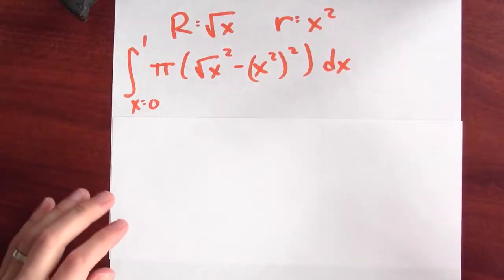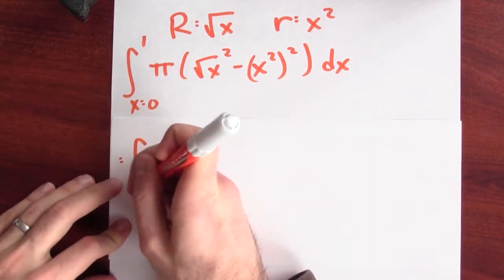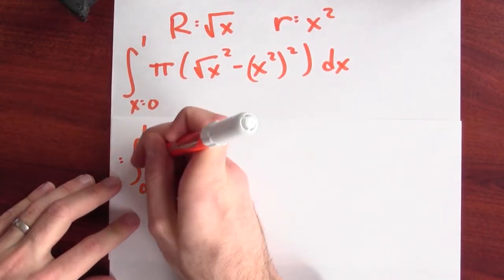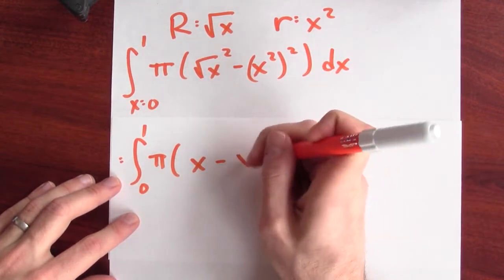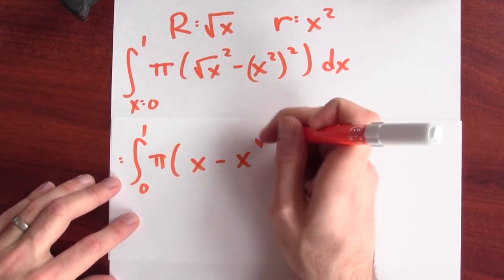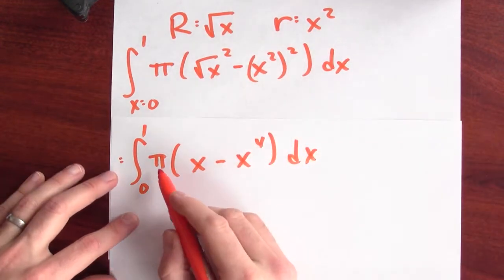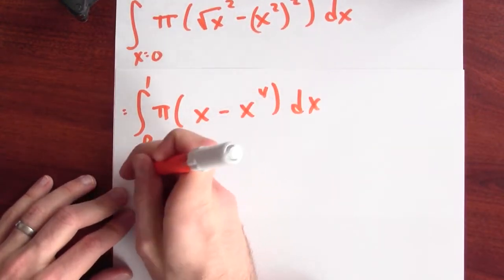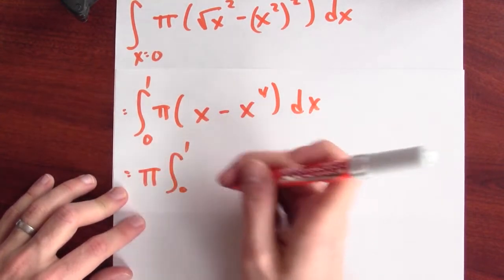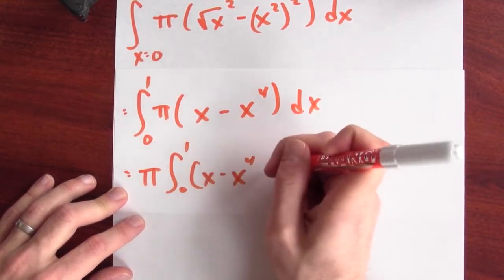Now, all that remains is to evaluate that integral. So to begin, I'll simplify the integrand a bit. This is the integral from 0 to 1 of π times square root of x squared, that's just x, minus x squared squared, that's x to the 4th. I've got a constant π. I'll pull that constant out. This is π times the integral from 0 to 1 of x minus x to the 4th.